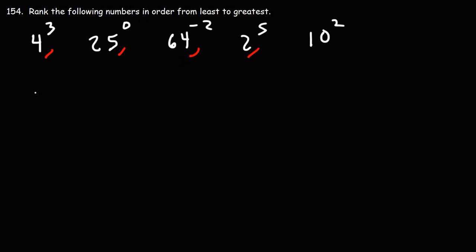4 to the third power — that's 4 times 4 times 4, which is 64. 25 to the zero power: anything raised to the zero power is 1.